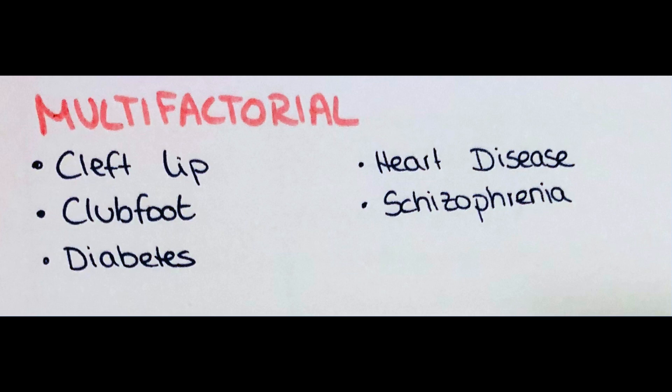Club foot is another multifactorial condition where one or both feet are rotated inwards and downwards. In 50% of cases it's one foot, in the other 50% it's both feet. This is usually corrected in the first four years of the child's development by stretching the Achilles tendon and casting the foot into its correct position — a long process, but usually treatable. Other multifactorial diseases include diabetes, different heart diseases, and also schizophrenia.